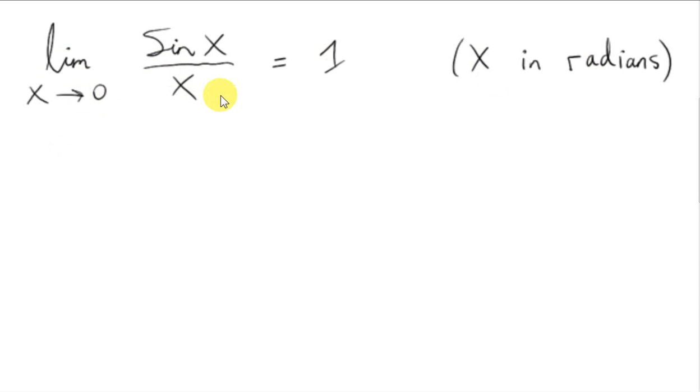So, the definition of a limit tells us that we can make this thing here as close as we like to 1, by making x sufficiently close to, but not equal to 0. That means that sin of x over x is approximately equal to 1, provided that x is close enough to 0. So x must be small, by small x must be approximately 0, but not equal to 0.